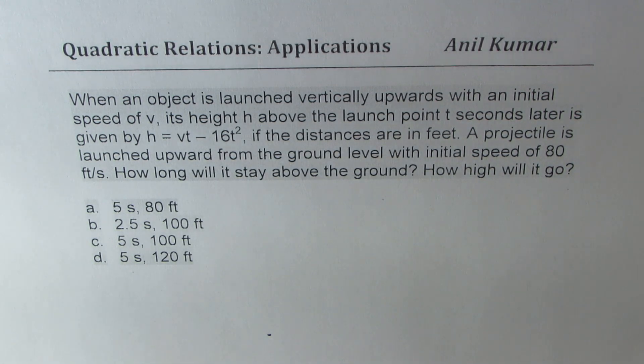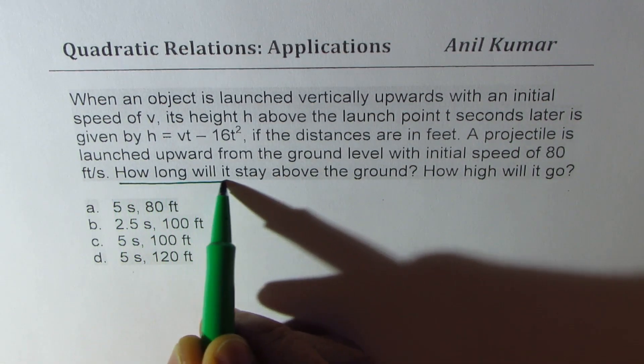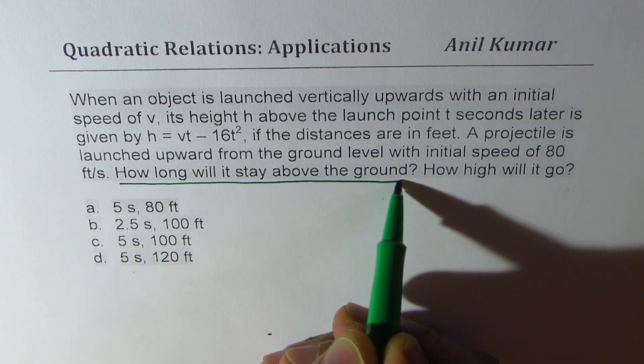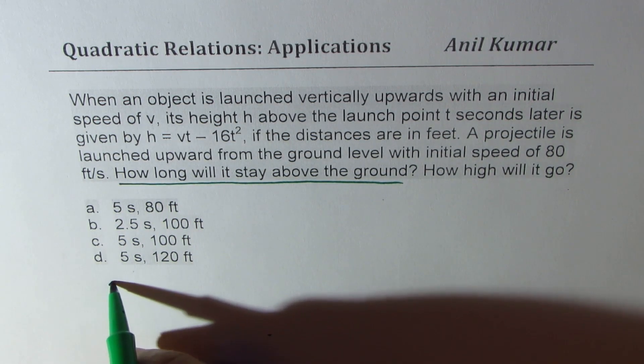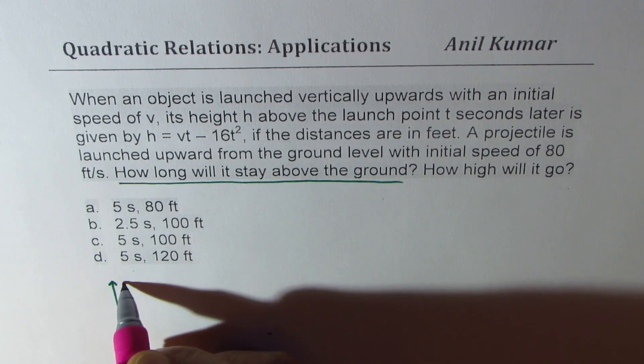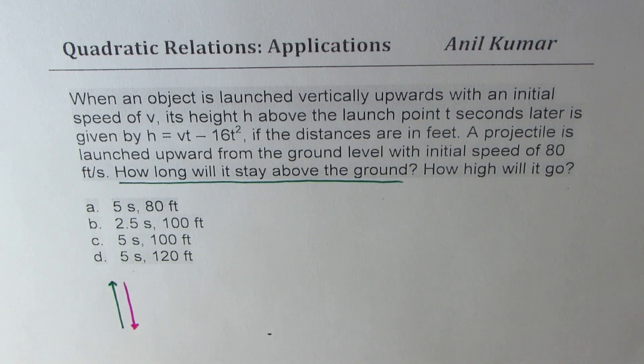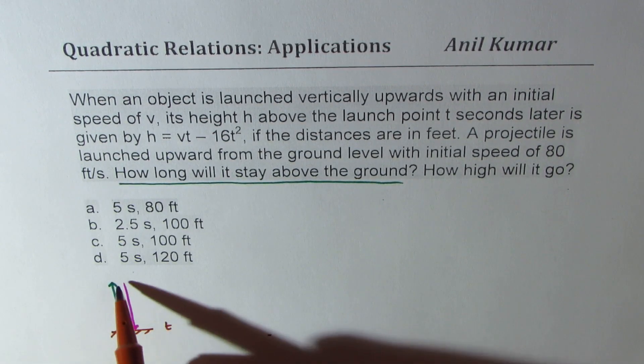Now, here is what I suggest. Let's be very clear of understanding what we need to find. First is how long it will stay above the ground. So if the projectile goes up and then it comes down, what we are interested in is total time. So we need total time t for going up and down.